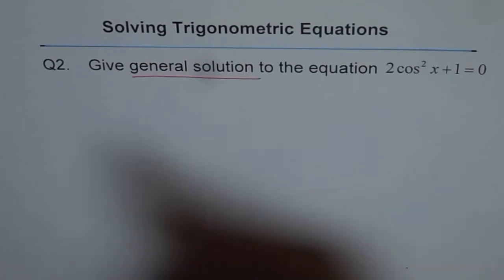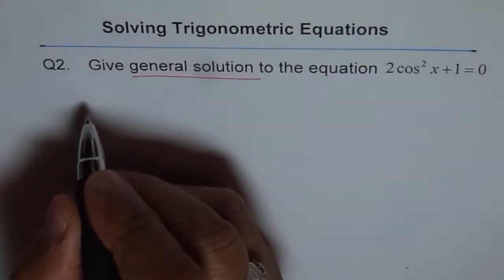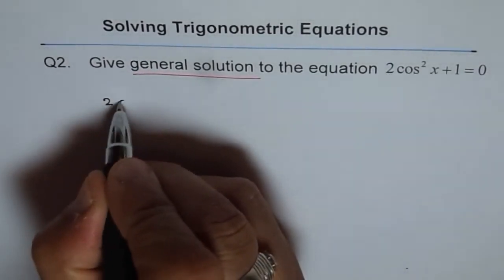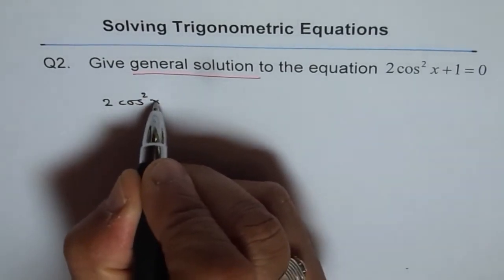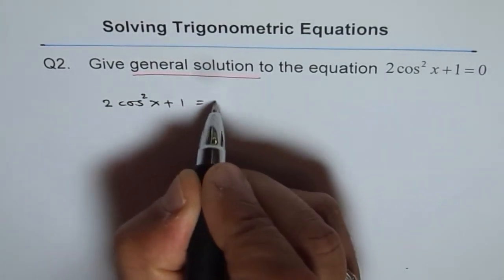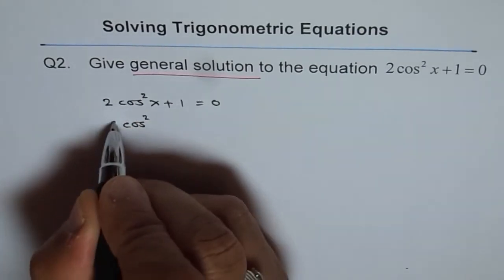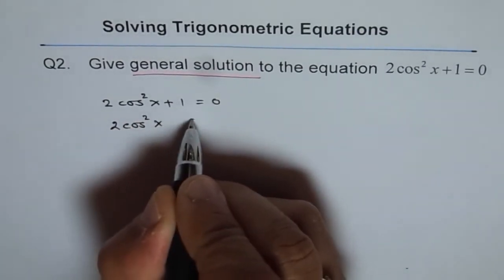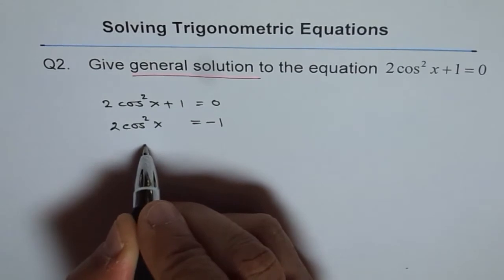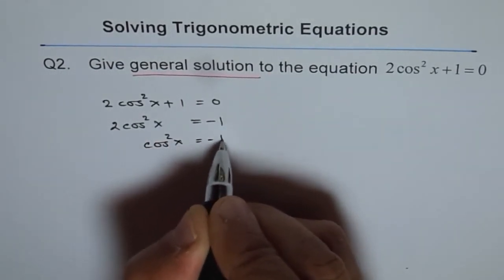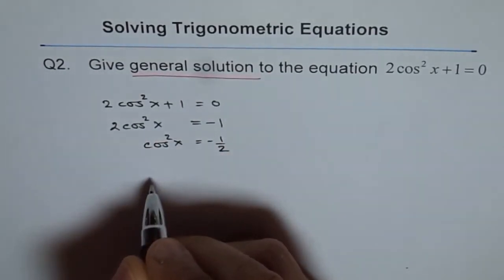Now, let's try to solve this equation and find general solution to this equation. We have 2 cos square x plus 1 equals to 0. That means cos square x, let's do it in steps.